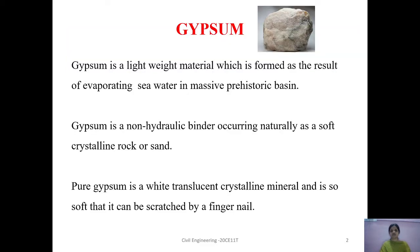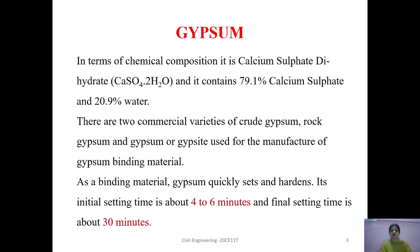Gypsum is a lightweight material which is formed as a result of evaporating seawater in massive prehistoric basins. It is a non-hydraulic binder occurring naturally as a soft crystalline rock or sand. The hardness of gypsum is about 2, therefore it is very soft and can be scratched by a fingernail. Pure gypsum is a white translucent crystalline mineral. The chemical composition of gypsum is Calcium Sulphate Dihydrate, CaSO4·2H2O.